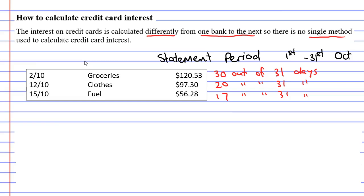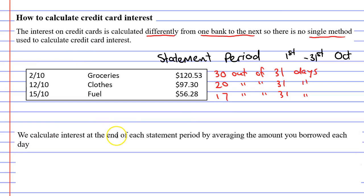So what are the banks going to do about this? Well, I found that one bank had a statement saying we calculate interest at the end of each statement period by averaging the amount you borrowed each day. So they find some sort of an average of these amounts. Other banks might make the effort and calculate the interest for each individual item that was purchased.